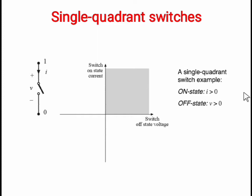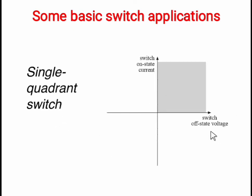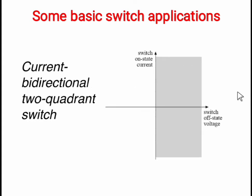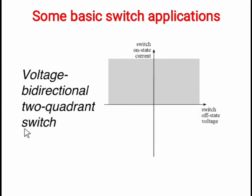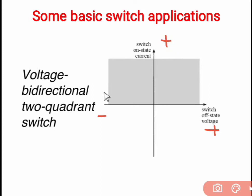A single quadrant switch is one in which voltage is positive and current is also positive. The current bidirectional two quadrant switch is one where current is positive as well as negative, but voltage is only positive. The voltage bidirectional two quadrant switch is one where voltage is positive and also negative, but current is only positive.